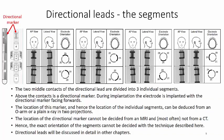Concerning these directional leads, the two middle contacts of the directional lead are divided into three individual segments. Above the contacts is a directional marker. During implantation, the electrode is implanted with the directional marker facing forwards. The location of this marker, and hence the location of the individual segments, can be deduced from an O-arm or a plain X-ray in two projections. The location of the directional marker cannot be decided from an MRI, and most often not from a CT. Hence, the exact orientation of the segments cannot be decided with the technique described here, but directional leads will be discussed in detail in other chapters.